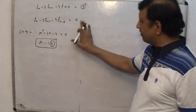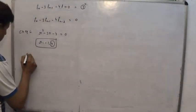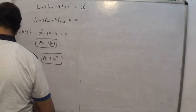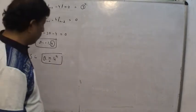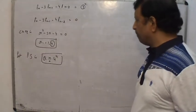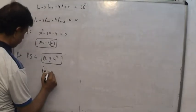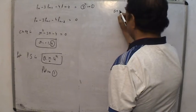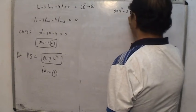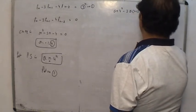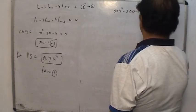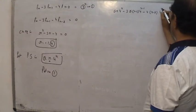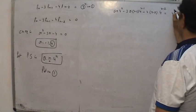The general solution structure is the same, but the particular solution differs. When a is a characteristic root of the characteristic equation, we consider the particular solution to be q into n into 4 raised to the power n. This extra factor of n is the key difference. We now put this into the original recurrence relation.